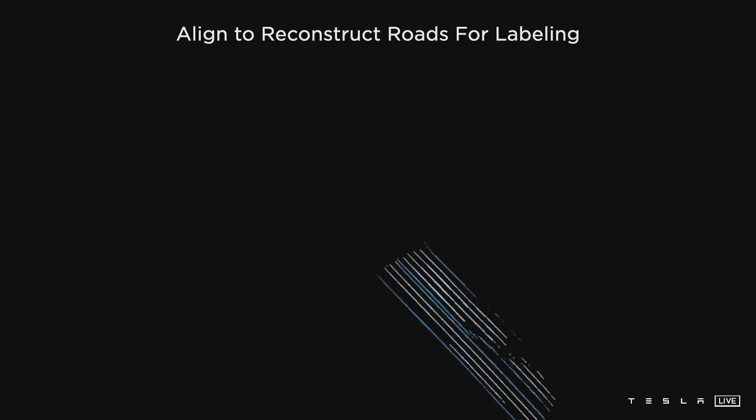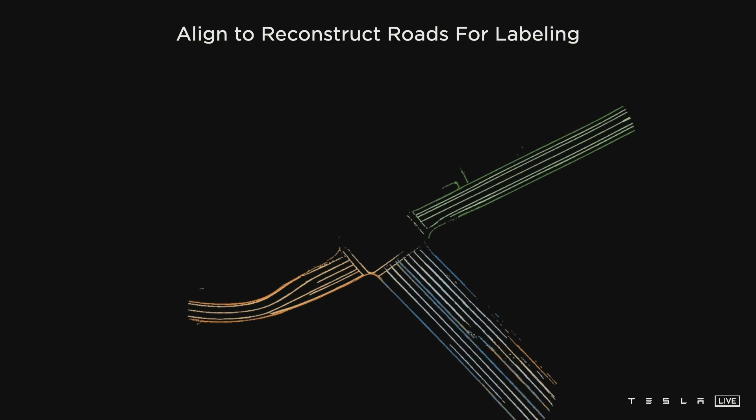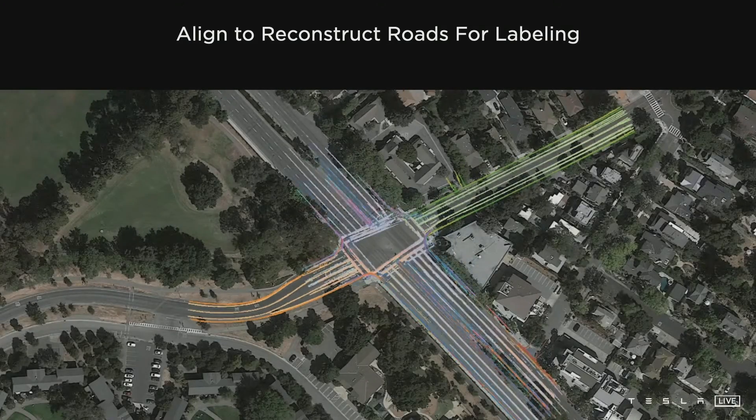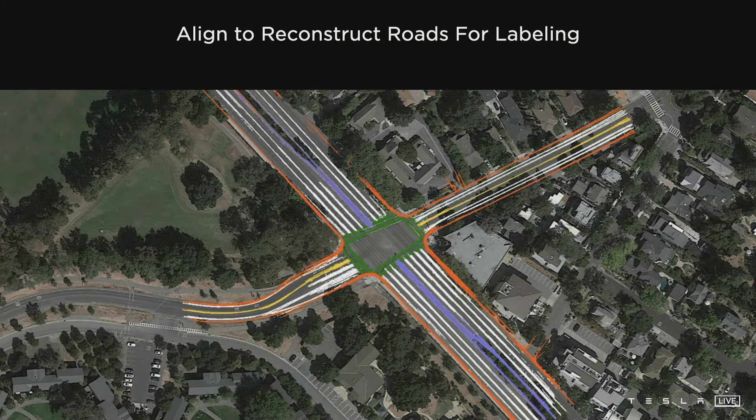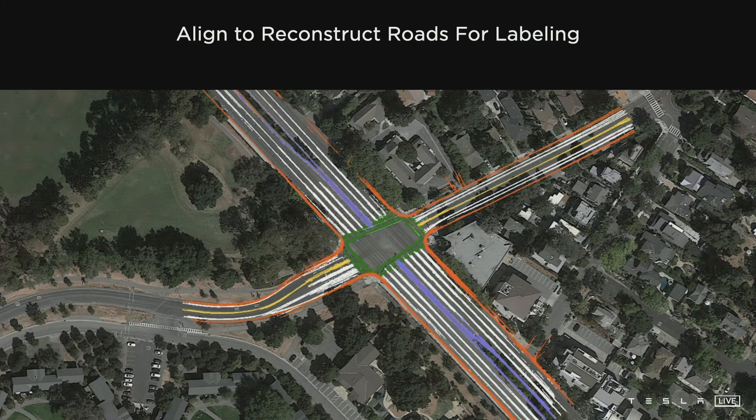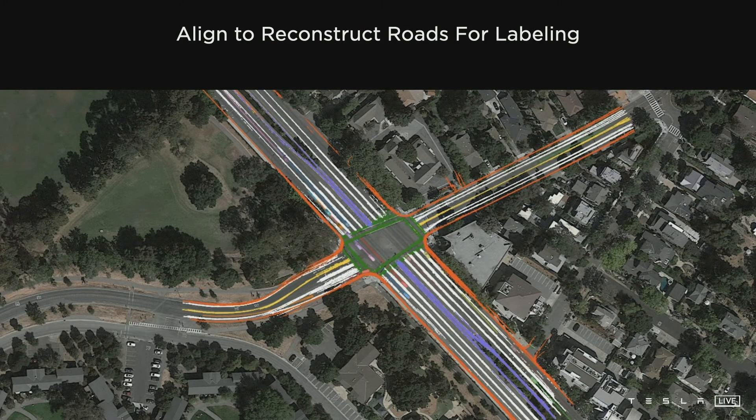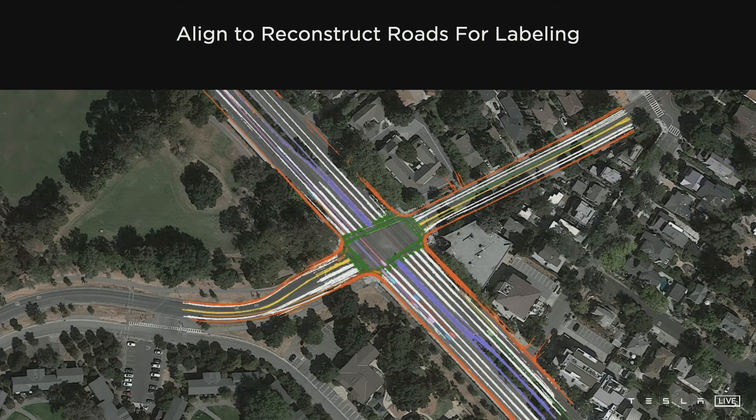The cool thing is we can bring them all together into a single giant optimization. Here these 16 different trips are organized or aligned using various features such as road edges, lane lines. All of them should agree with each other and also agree with all of their image space observations. Together this produces an effective way to label the road surface, not just where the car drove, but also in other locations that it hasn't driven yet.